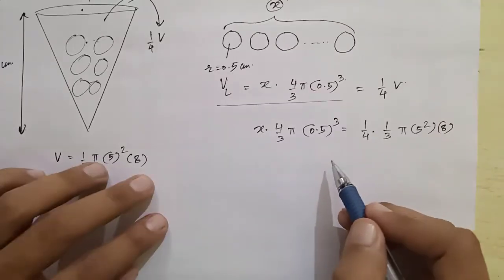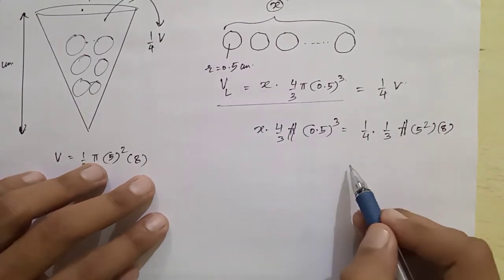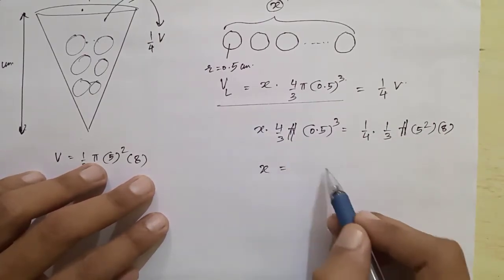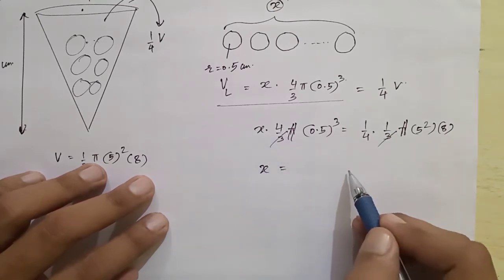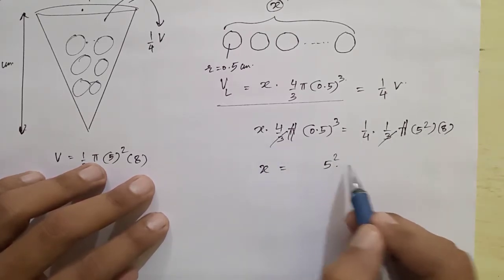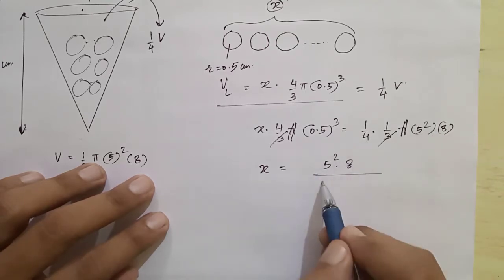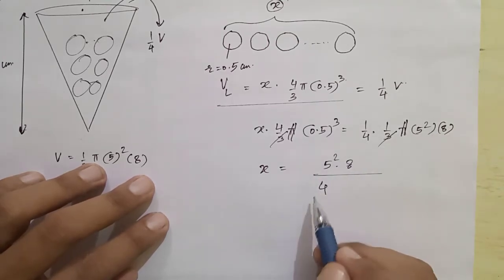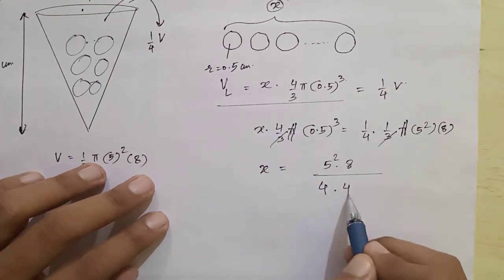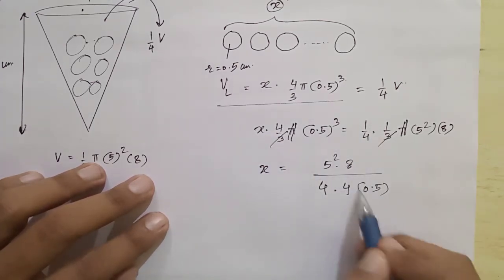Now we apply the calculations. π and π cancel out. Here 3 also cancels out. We need to find the value of x. So the 4 goes to the denominator and (0.5)³ goes to the denominator as well, giving us the expression: x = 5² × 8 / (4 × (0.5)³).